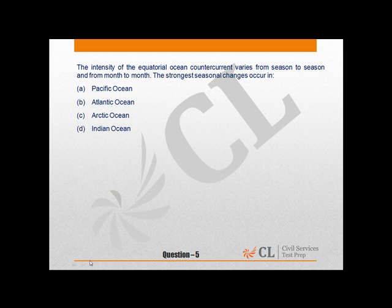The intensity of the equatorial counter current varies from season to season and from month to month. The strongest seasonal changes occur in the Atlantic Ocean — eastward flow reaches a maximum in the summer and disappears when we proceed towards spring season. Seasonal changes are weaker in the Pacific Ocean. Since the question asks about the strongest seasonal changes, the answer is b) Atlantic Ocean.